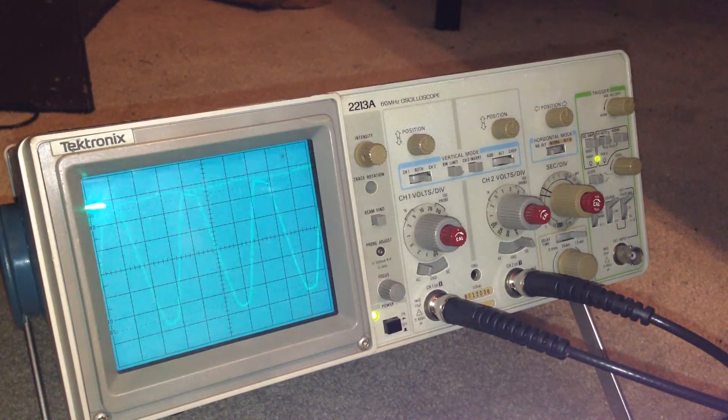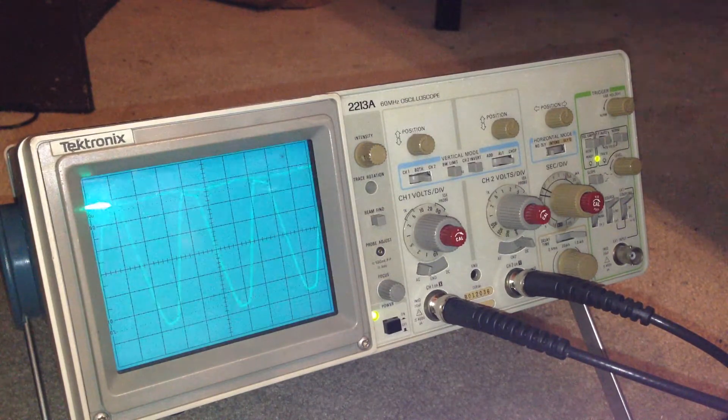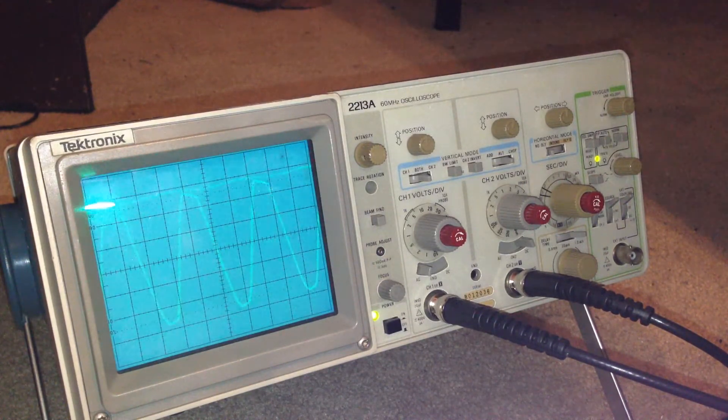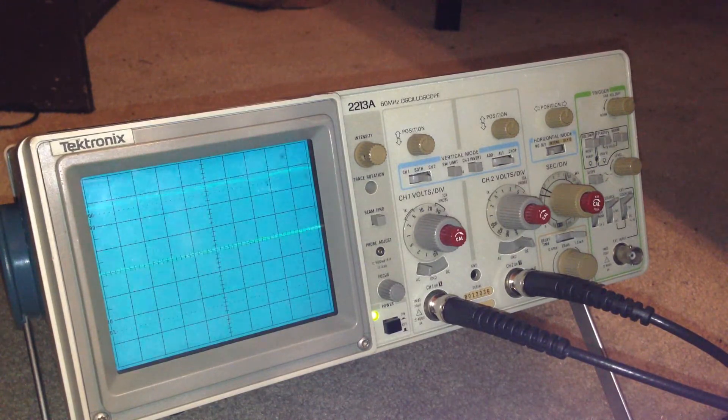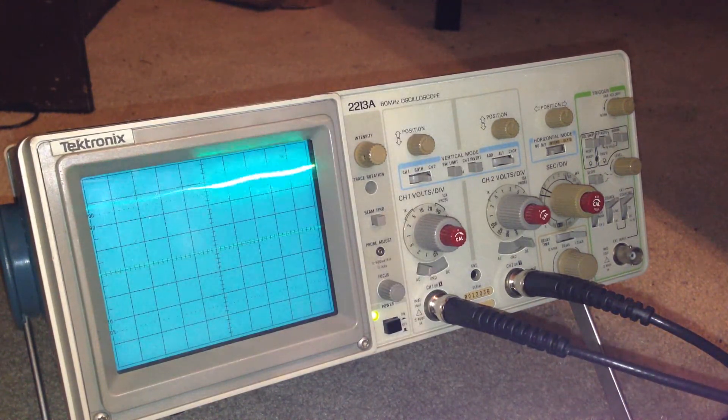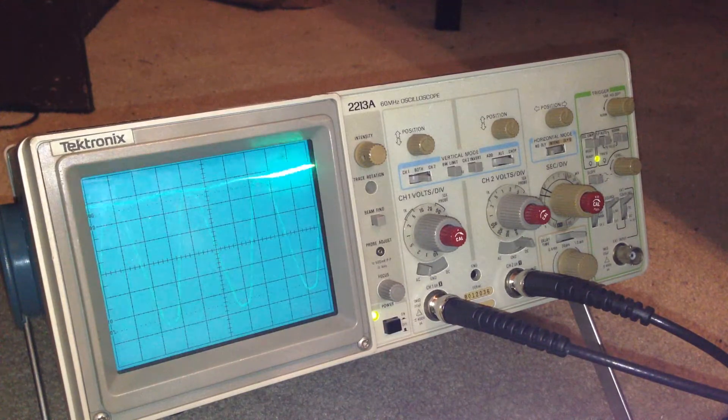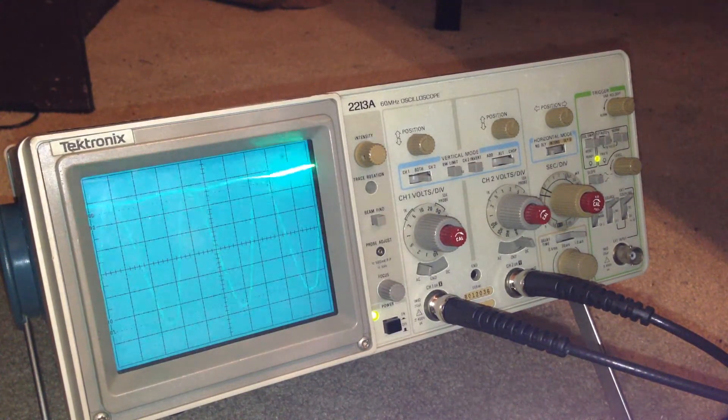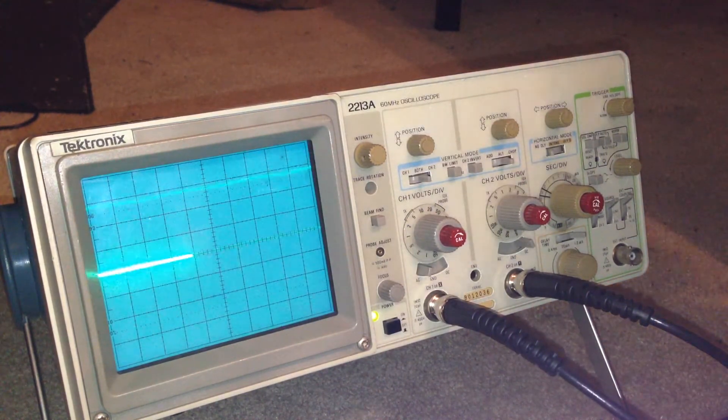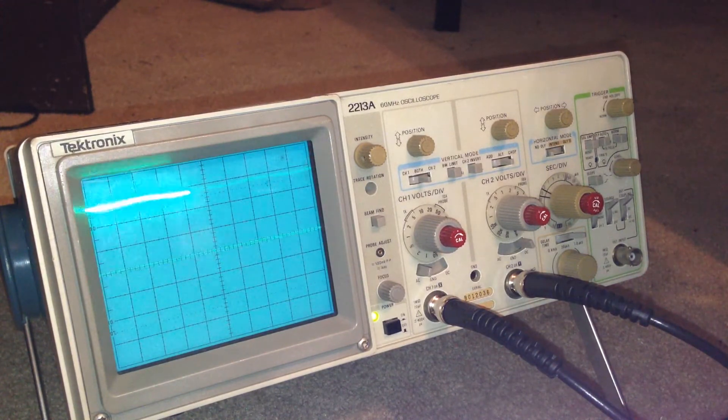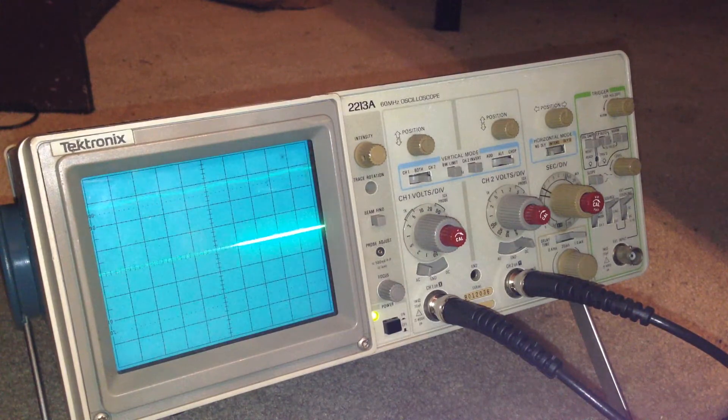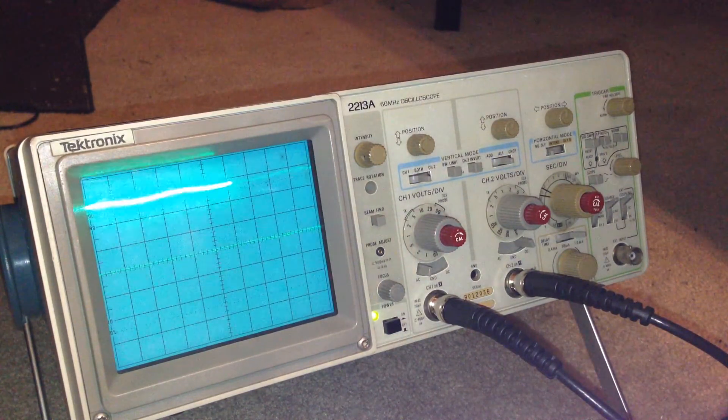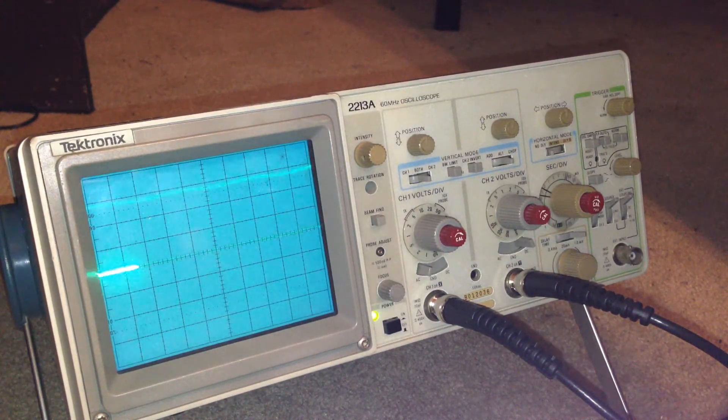There you go. Ignore channel 2. That's pretty damn cool. And then I can't seem to adjust the frequency any, or the amplitude any lower. That's just one channel versus ground. So yeah. It's working. And it's measuring AC. And it's pretty damn awesome. Excited.